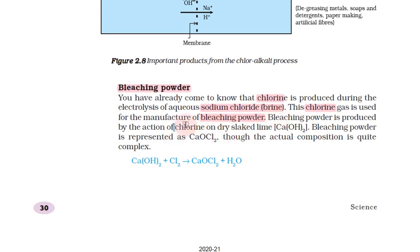Chlorine reacts with dry slaked lime — calcium hydroxide — to produce bleaching powder. The formula is CaOCl2. Calcium hydroxide reacts with chlorine to give bleaching powder with formula CaOCl2.